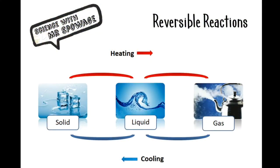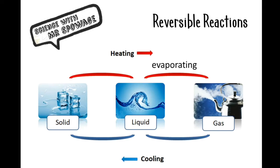Reversible reactions are where we can move between these states of matter. So we could move between a solid and a liquid, and we would call this melting. We could move between a liquid and a gas, and we would call this evaporating, and both of those require heat to make them happen.